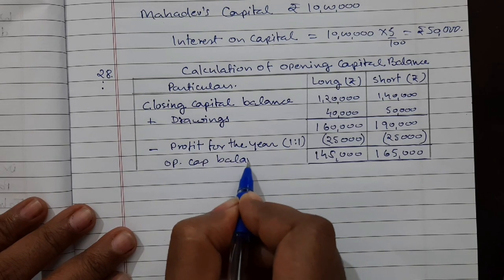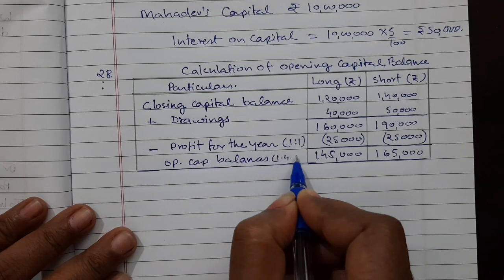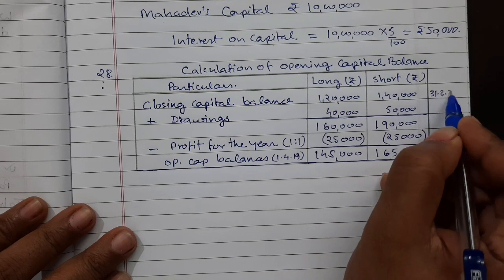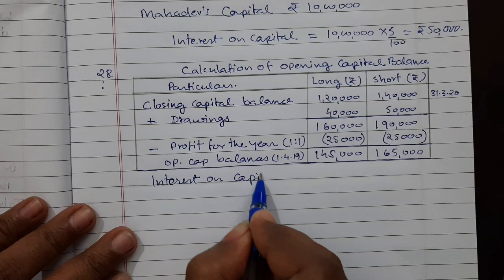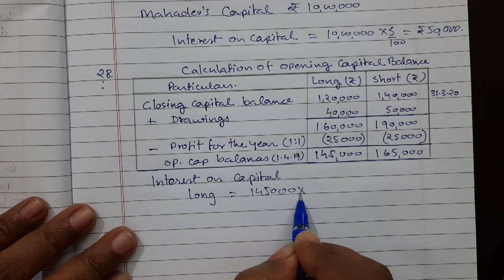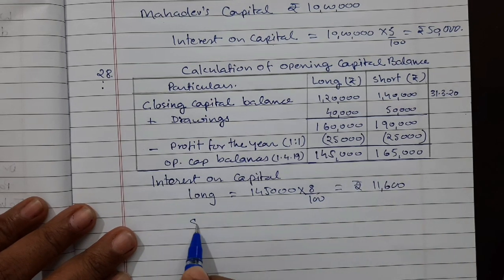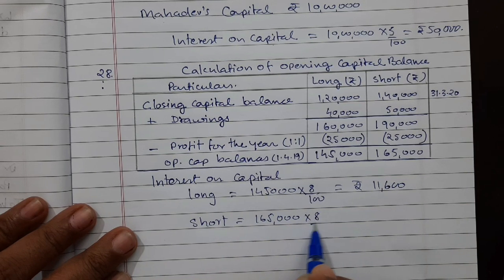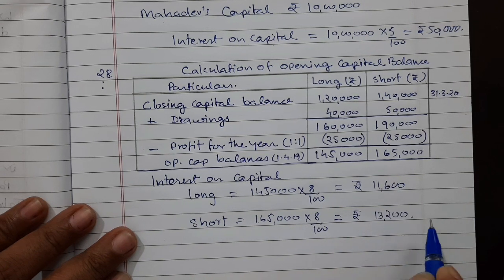These opening capital balances are as of 1st April 2019, and the closing balance is on 31st March 2020. Interest on capital for Long is 1 lakh 45,000 × 8% = rupees 11,600. Interest on capital for Short is 1 lakh 65,000 × 8% ÷ 100 = rupees 13,200. That is our answer.